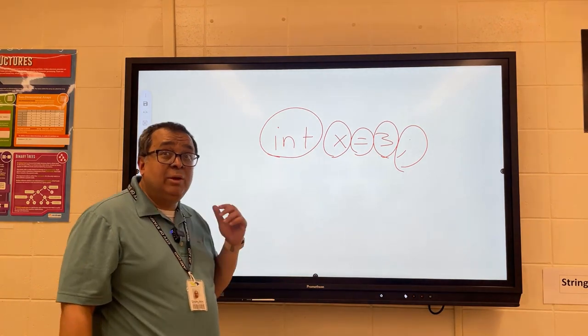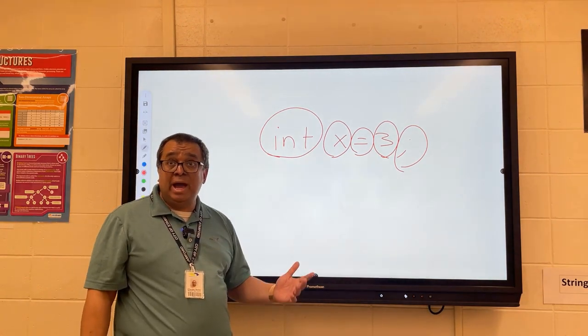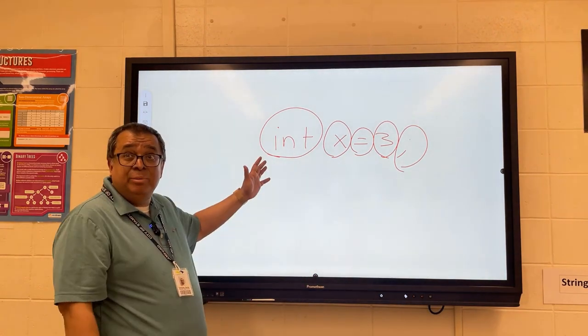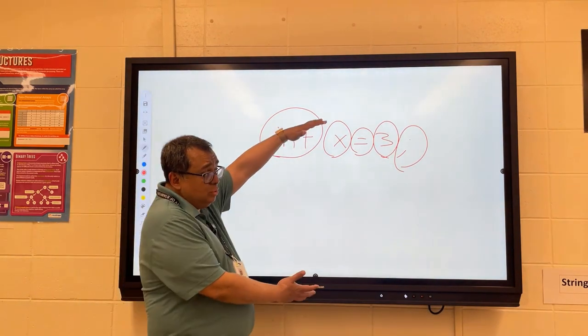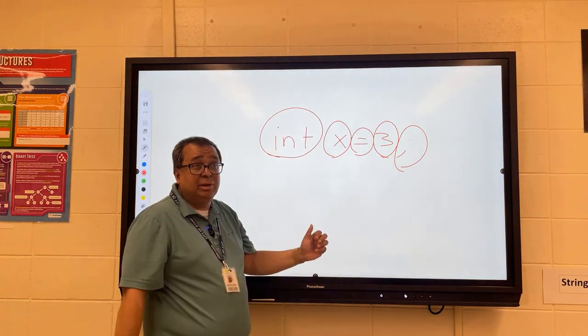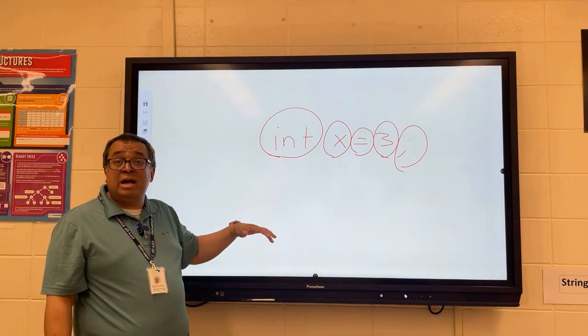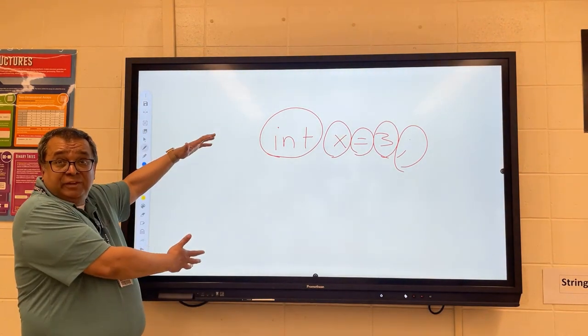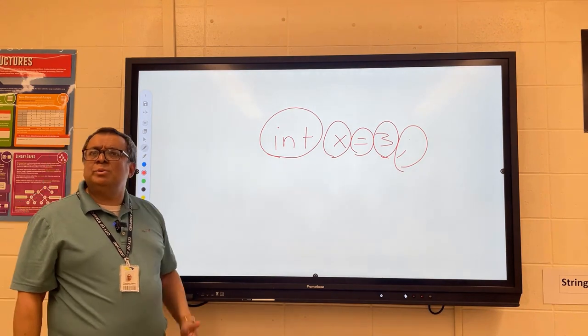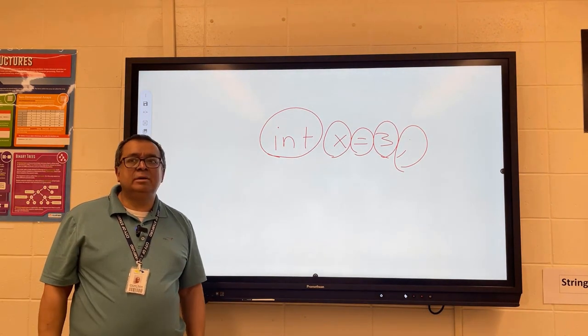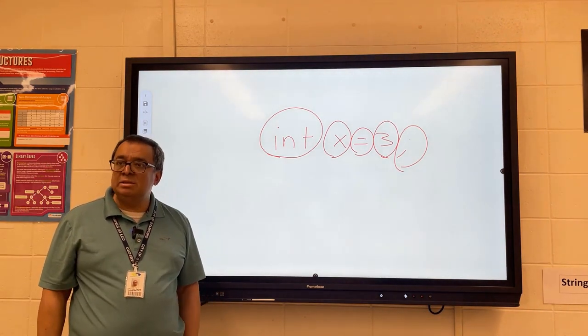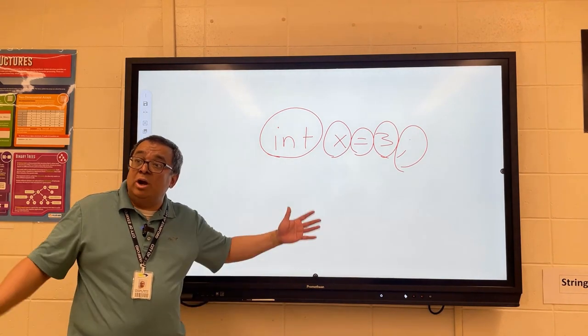So normally when we hash, we have lots of input and we put it into some reasonable size table. This is an unusual situation where the inputs are not only small, like maybe about 50, but what else is unusual about this situation? What's unusual about the inputs? Yes, they never change. We know what they are ahead of time.